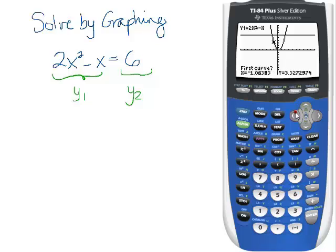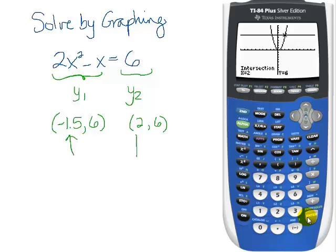And now I'm going to find it. So our first intersection is at negative 1.5 comma 6. And our second intersection is at 2 comma 6. Now remember, when we say solve for x, we really only care about the x value here. So it seems to me like we have two answers, negative 1.5 and positive 2.